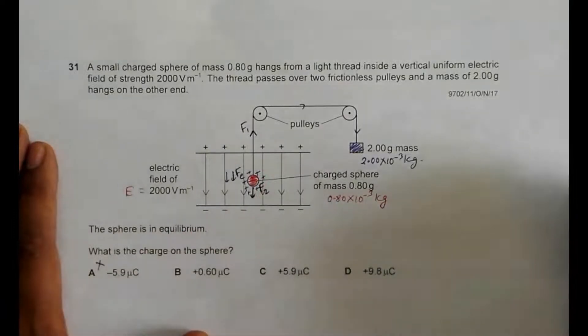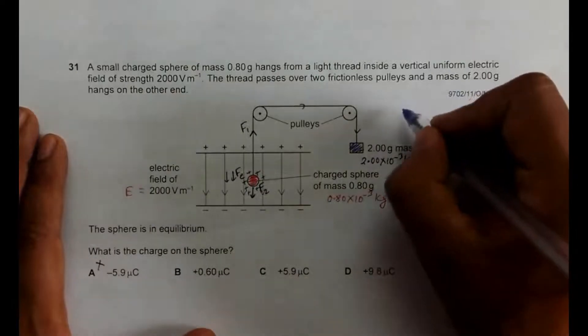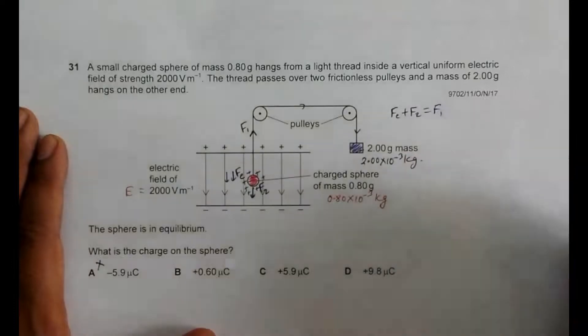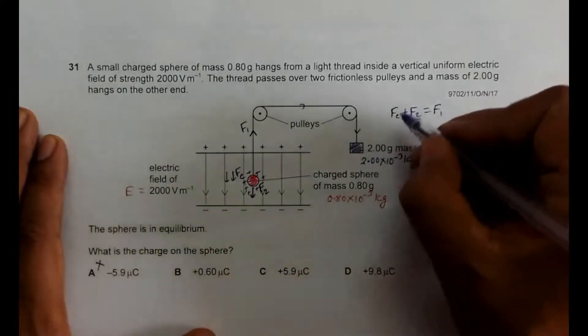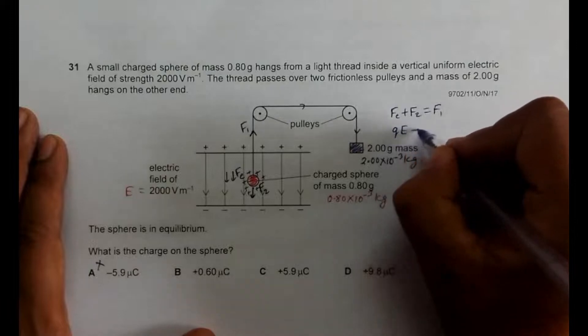Now let's go for the calculations. So what we have is Fe plus F2 is equal to F1. So Fe is equal to Q into E plus F2 is equal to